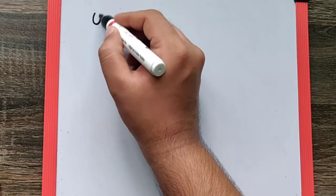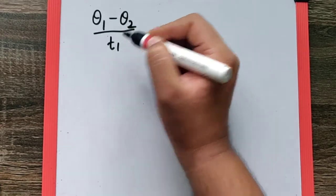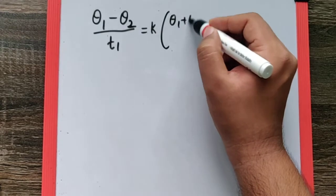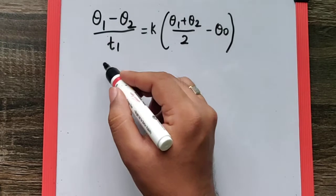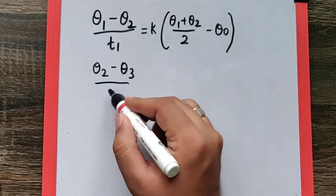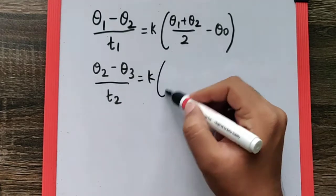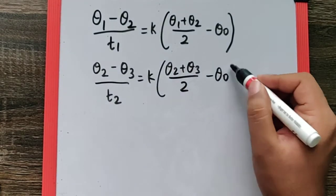Here we again need to use Newton's law of cooling, which says when the body cools down from theta 1 to theta 2, we can use theta 1 minus theta 2 by the time T1. It's equal to K times the average of theta 1 and theta 2 minus the surrounding temperature, which when temperature falls from theta 2 to theta 3 in time T2 is K times the average of theta 2 and theta 3 minus the surrounding temperature.